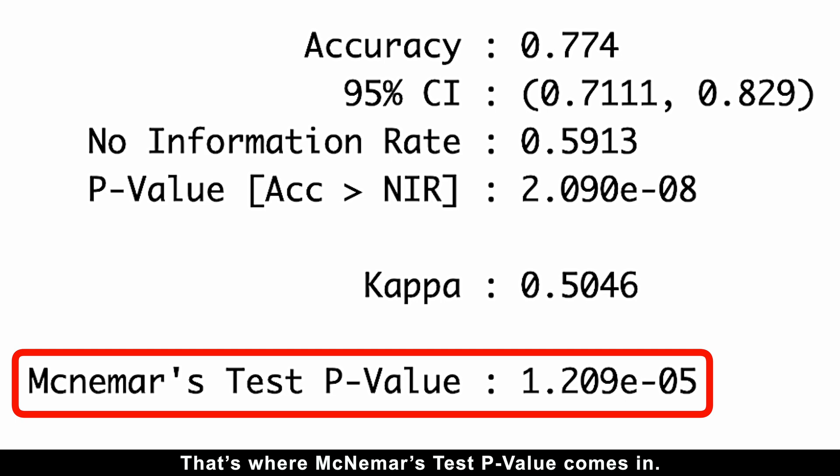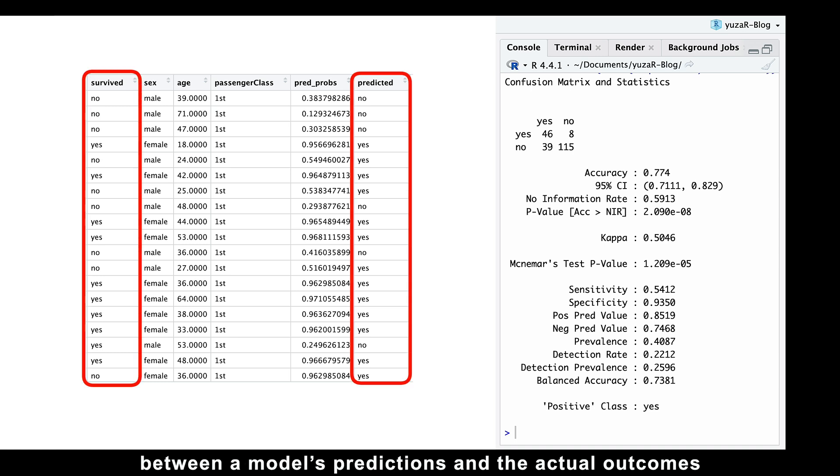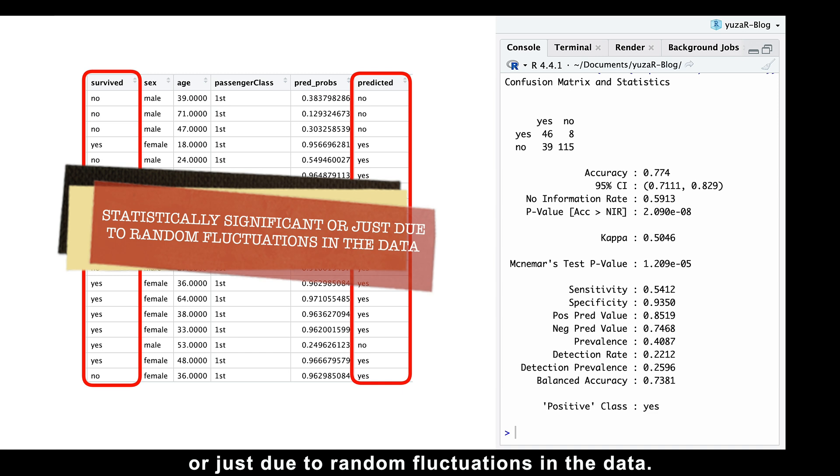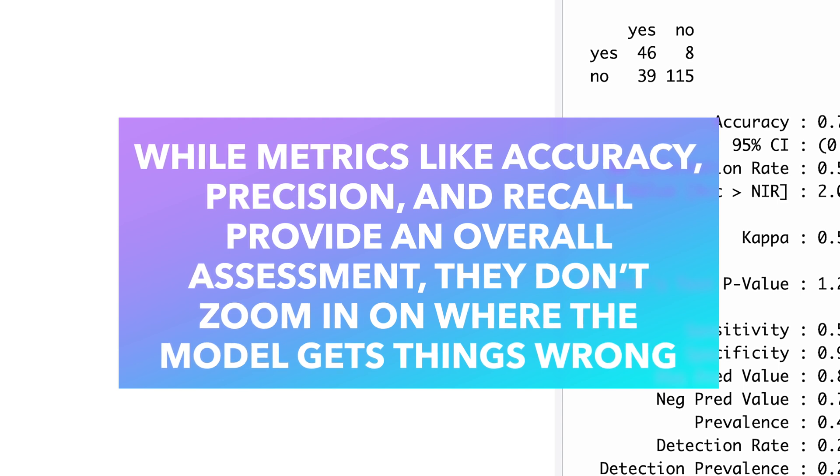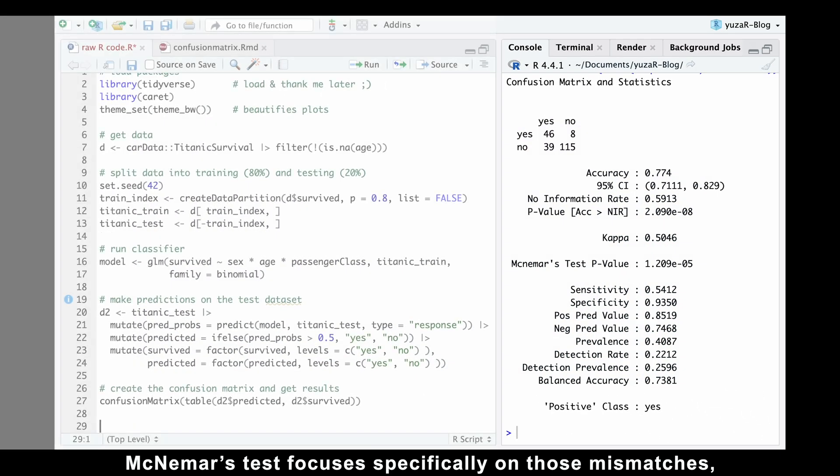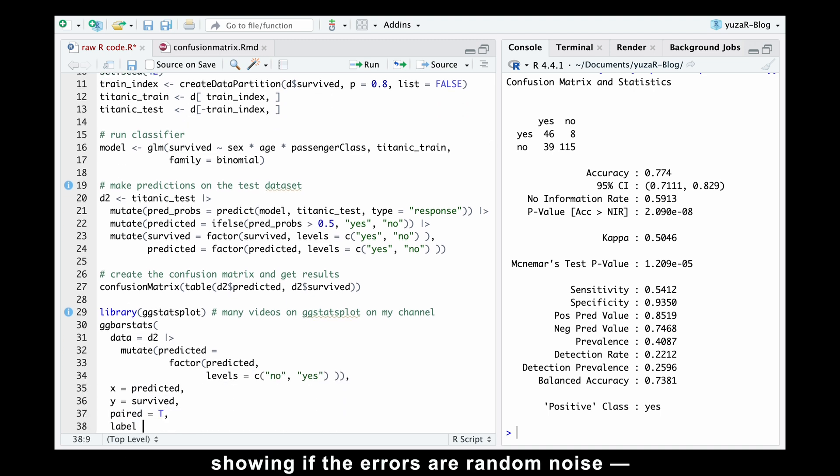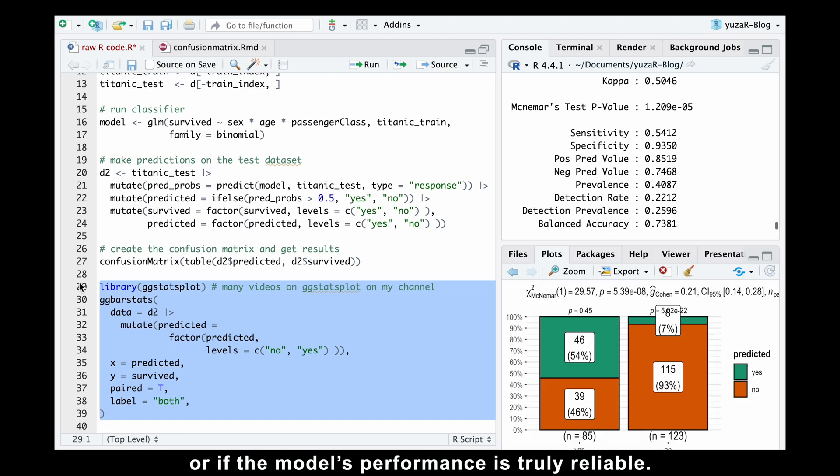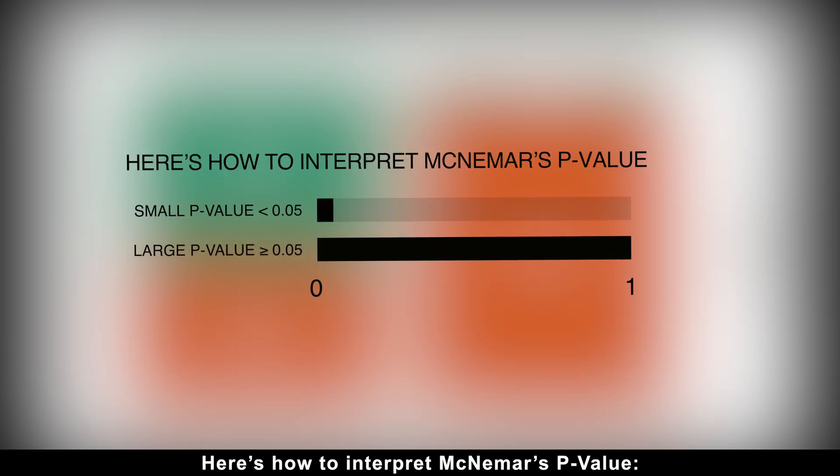That's where McNemar's test p-value comes in. McNemar's p-value tests whether the disagreements between the model's predictions and the actual outcomes are statistically significant or just due to random fluctuations in the data. While metrics like accuracy, precision, and recall provide an overall assessment, they don't zoom in on where the model gets things wrong. McNemar's test focuses specifically on those mismatches, showing if the errors are random noise or if the model's performance is truly reliable.